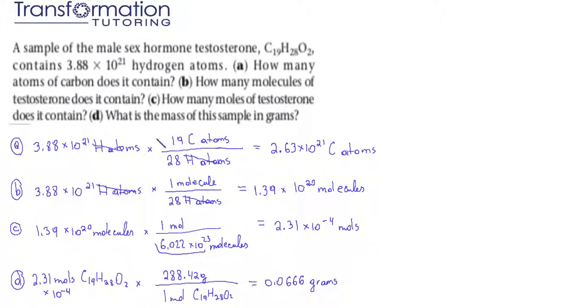Part D: What is the mass of the sample in grams? To convert between moles and grams, we use the molar mass. We get the molar mass by looking at the periodic table, finding the mass of each element, multiplying it by the number of atoms we have, and then adding it up. I already calculated the molar mass to be 288.42 grams per mole.